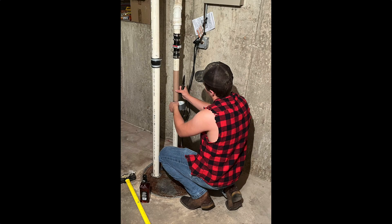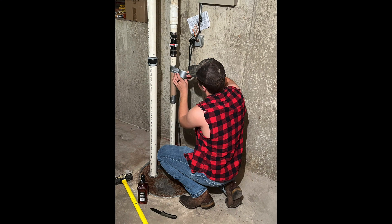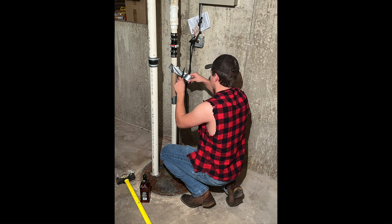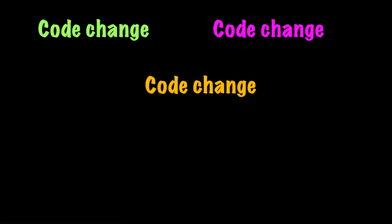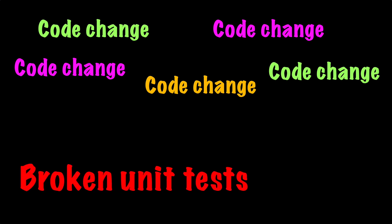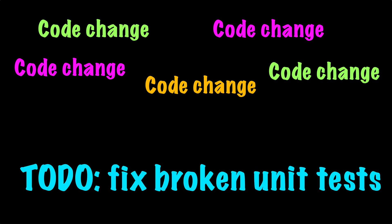Optimal code includes proper unit testing, QA testing, and line coverage. Supporting unit tests makes refactoring code easier. Avoid performing a quick fix for immediate deployment with the intention of making it optimal later. And making too many changes in multiple locations without running or having supporting unit tests can lead to more technical debt.